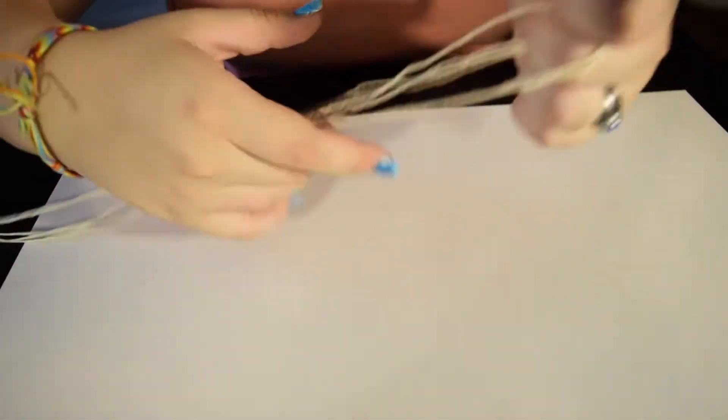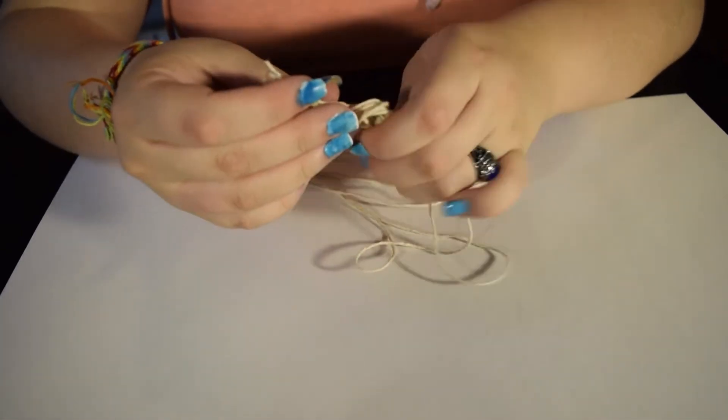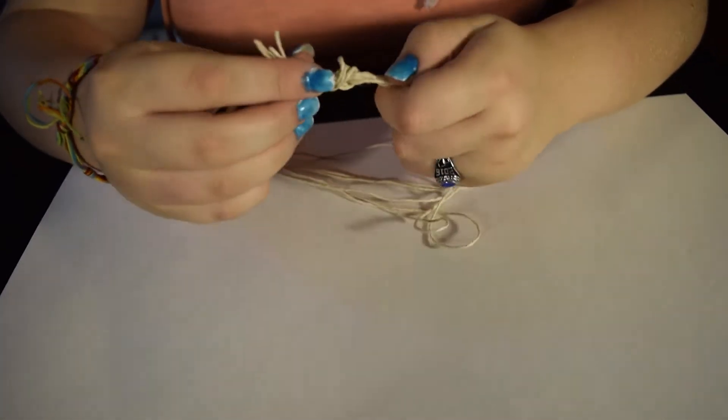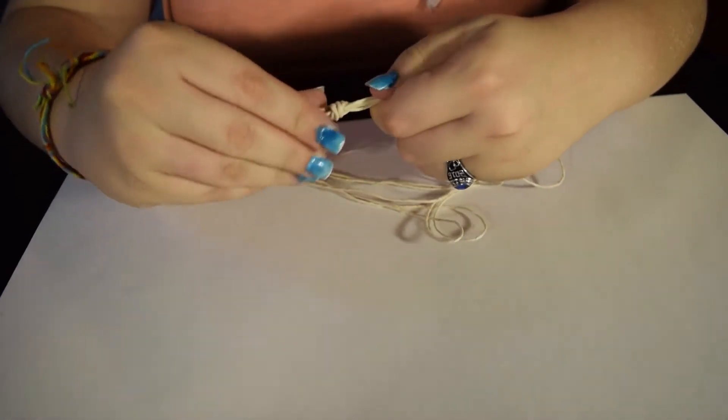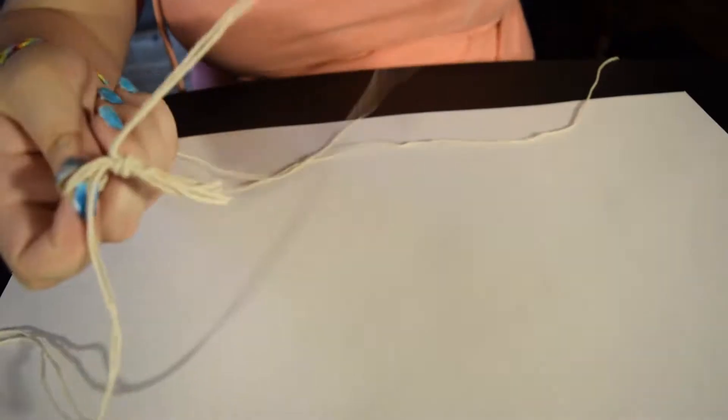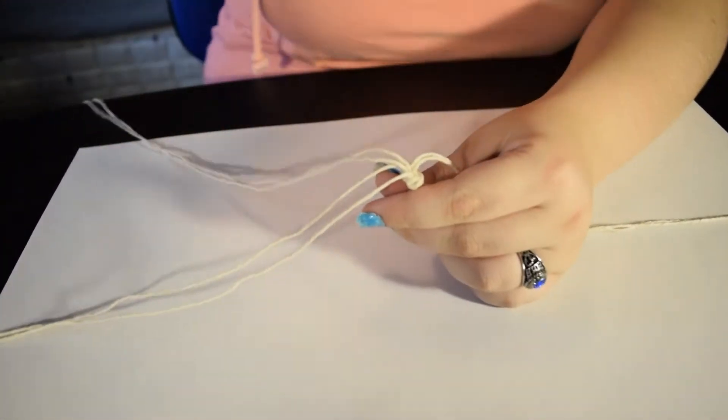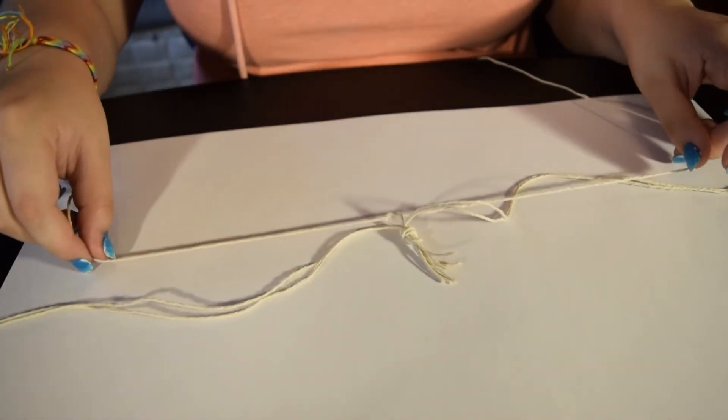Then at one end, tie a knot. Now it's time for the tricky part. I separate the strings into three groups. Each of the three groups I have two strings. Then you're going to need to tie them together.